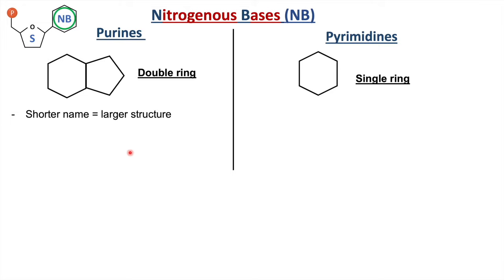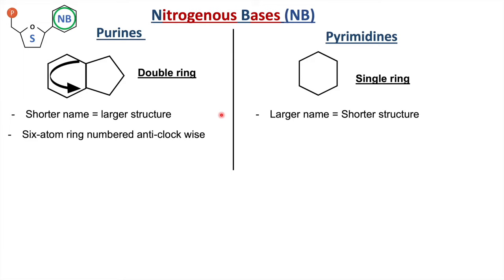One way to remember: purine has a shorter name but a larger structure — a six-carbon ring and a five-carbon ring. Pyrimidine has a longer name but a shorter structure — only a single six-carbon ring. Also, the six-atom ring in purines is numbered anti-clockwise, whereas the six-carbon ring in pyrimidines is numbered clockwise.